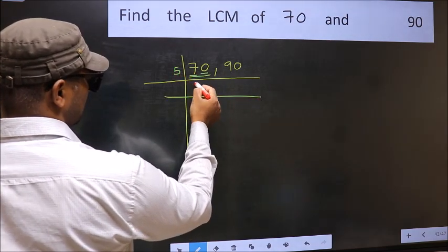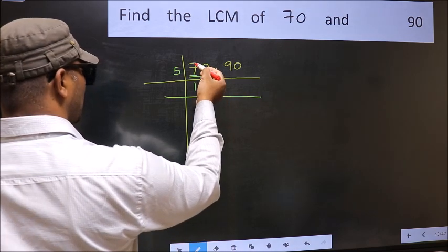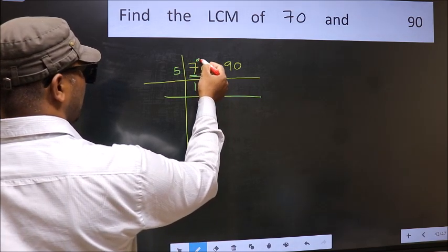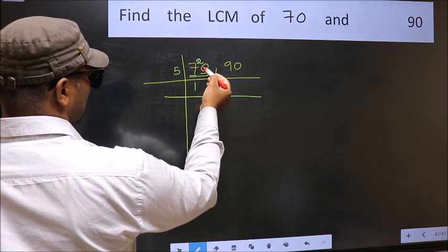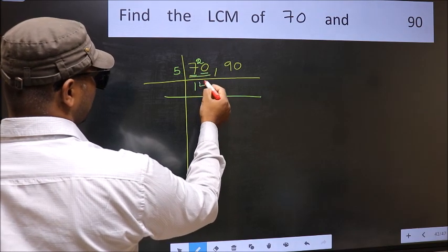A number close to 7 in the 5 table is 5 once 5. 7 minus 5 is 2, 2, carried forward 20. When do we get 20 in the 5 table? 5 fours 20.